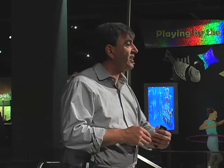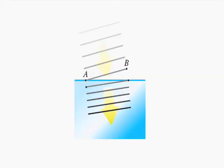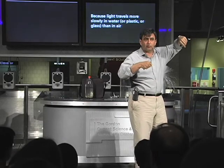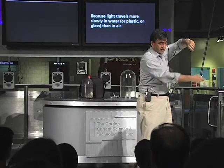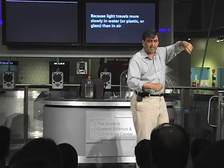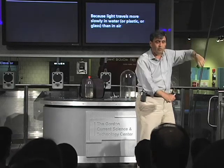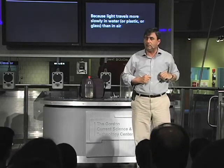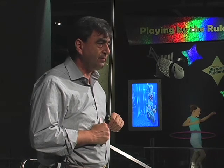Now imagine it comes in not straight, but it comes in at an angle. If it comes in at an angle, one side is going to hit the water before the other side. So imagine an axle traveling on a hard surface that reaches the boundary between that hard surface and sand, and one wheel hits the sand before the other. What will happen? It will rotate — it will bend. And the same thing happens with light in water.